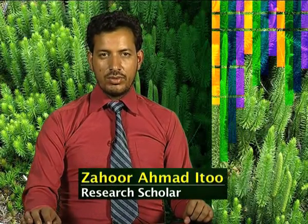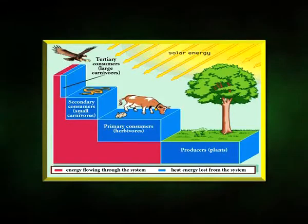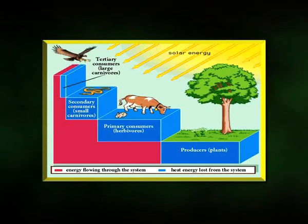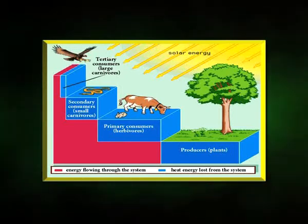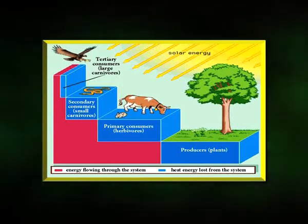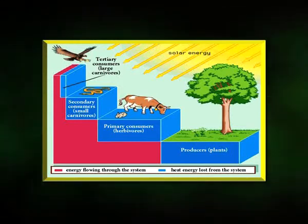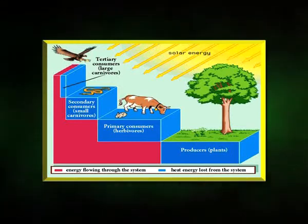Ecosystems are units consisting of a unified group of components forming a systematized whole. Energy moves unidirectionally through ecosystems from producers to consumers, and from both these groups to decomposers along a food chain, and ultimately is lost from the system in the form of heat.